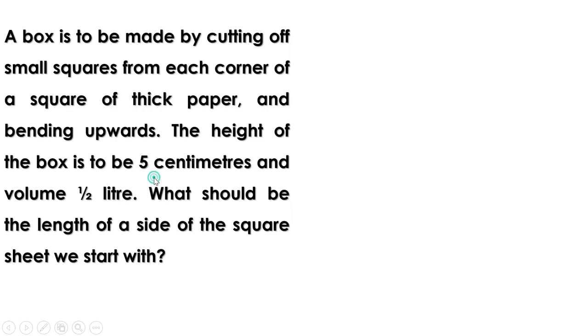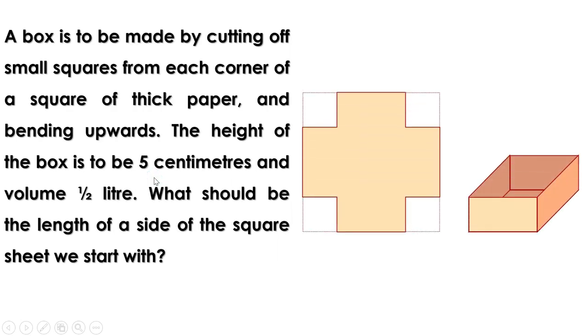Another problem: a box is to be made by cutting off small squares from each corner of a square sheet of thick paper and bending upwards. The height of the box is to be 5 centimeters and the volume half a liter. What should be the length of a side of the square sheet? First, a square sheet of paper is taken, then four small squares are cut off from all four corners.